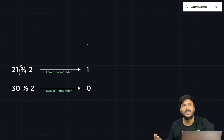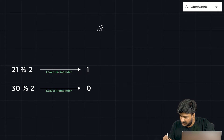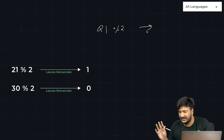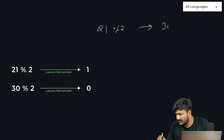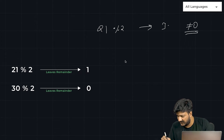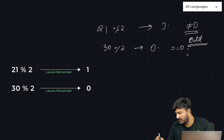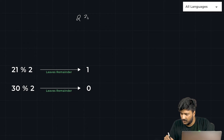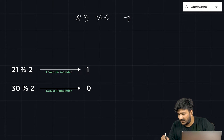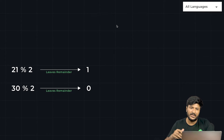This operator simply gives you the remainder. For example, 21 % 2 returns 1 — is that equal to 0? No, so it's odd. For 30 % 2, it returns 0 — which equals 0, so we say even. Another example: 23 % 5 returns 3 as the remainder, and we can work with that.